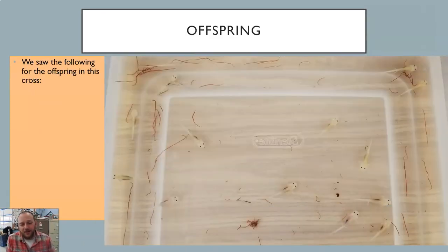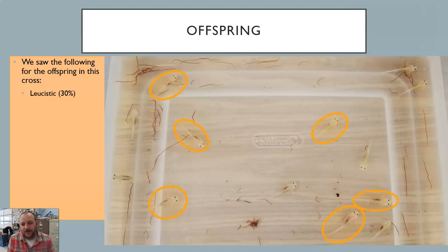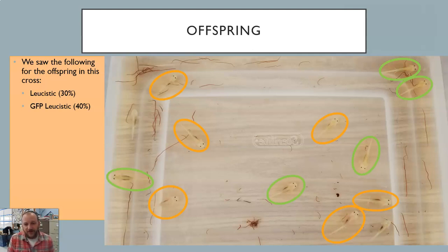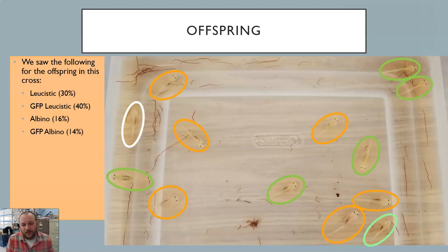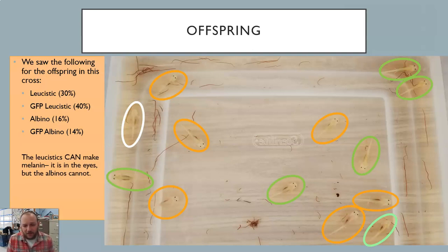Our offspring showed a good bit of variety with this cross — we actually saw four different phenotypes. We did see some straight leucistics, about 30% of all our axolotls. We also saw some GFP leucistics, 30% to 40%. But somewhat surprisingly, we also saw some axolotls that were albino — about 16% were true albinos without the GFP characteristic, and about 15% were showing albinism but also showing the GFP characteristic. Leucistics can make melanin — they have black in their eyes — but the albinos cannot. About half of our offspring could make GFP and half could not.